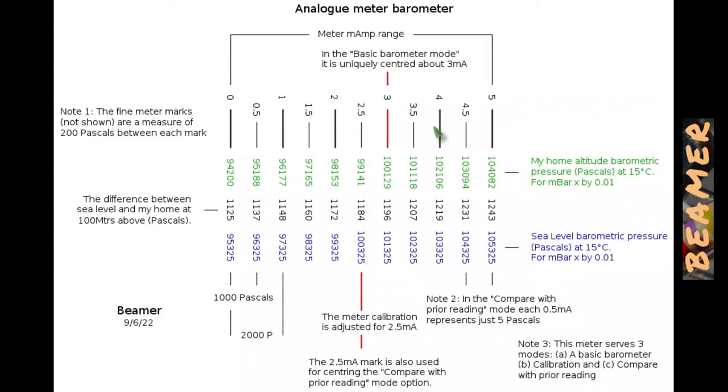To practically demonstrate this meter running, if the barometric pressure were at sea level, let's say 99325 pascals, then the meter would read 2 milliamps, which at my home barometric pressure, 100 metres above sea level, would therefore be 98153. That's equally true if the sea level pressure were now say 103325, that would represent 4 milliamps, which would represent at my home 102106.